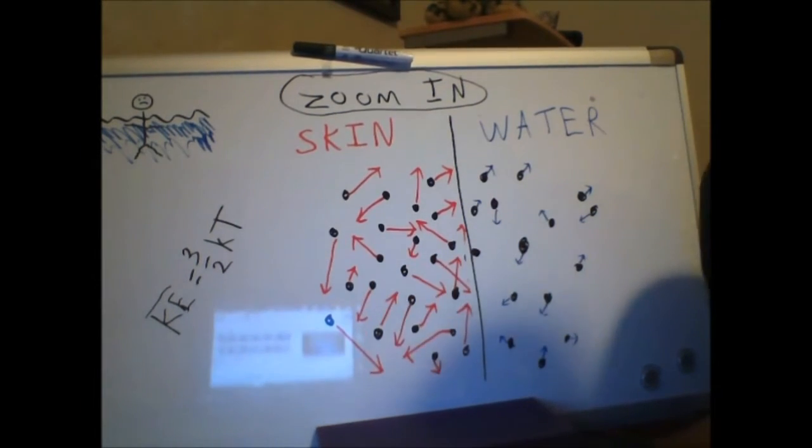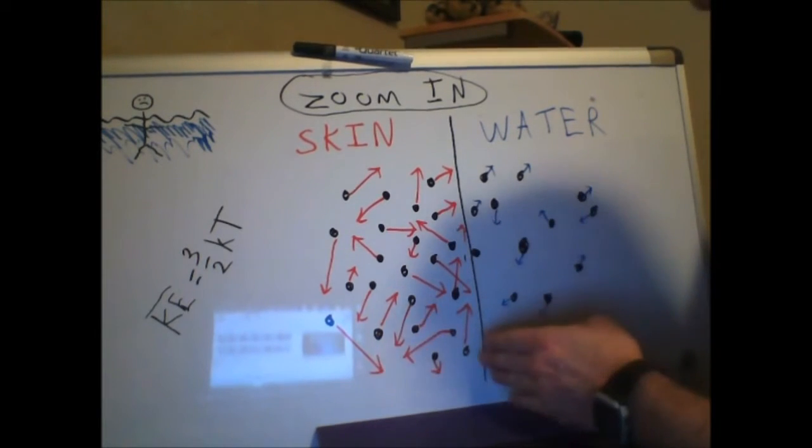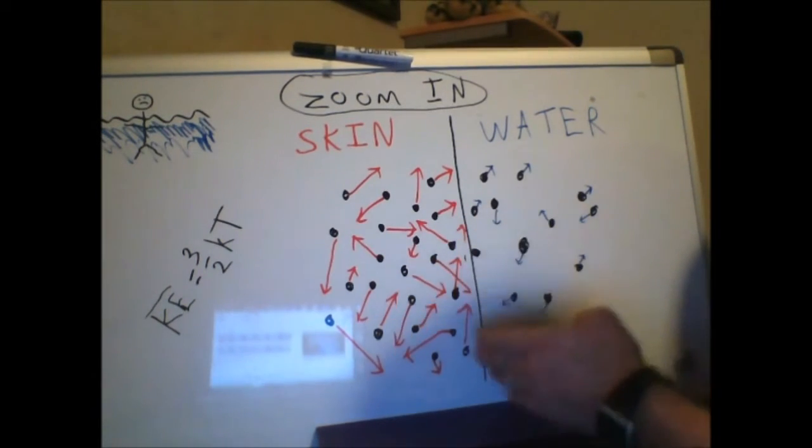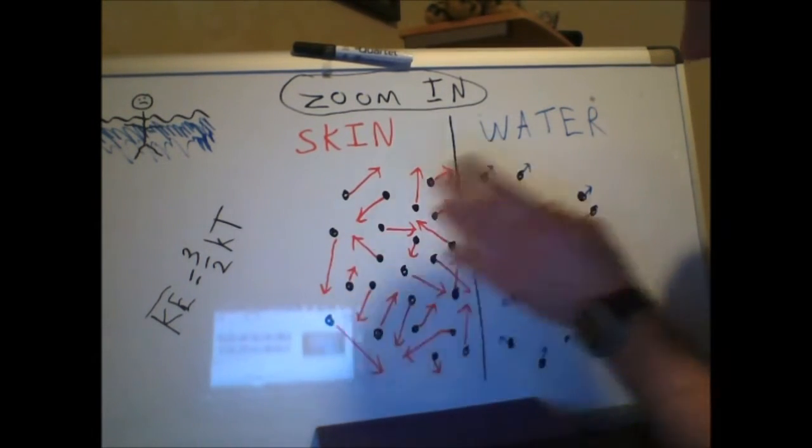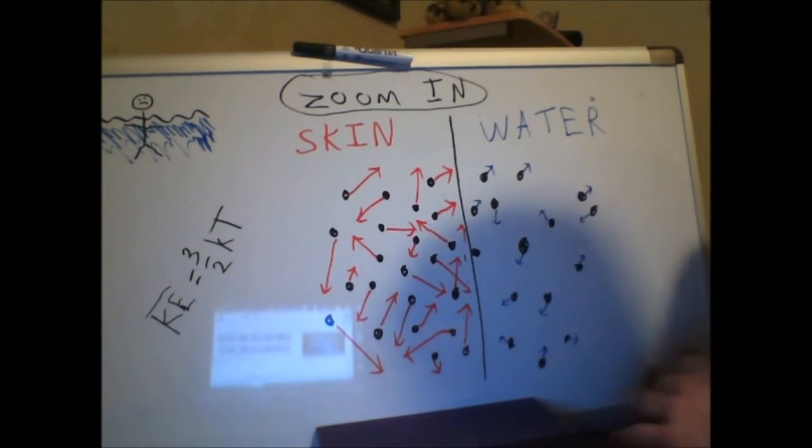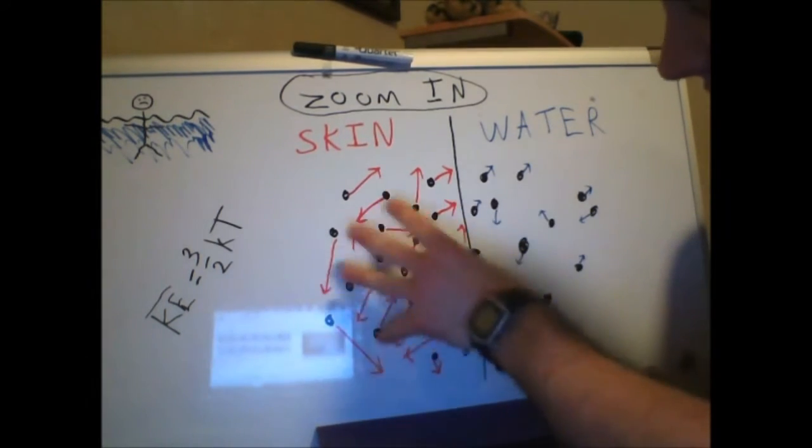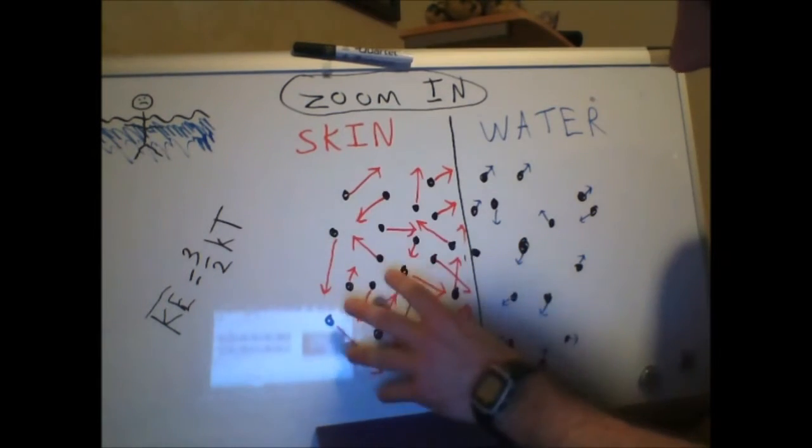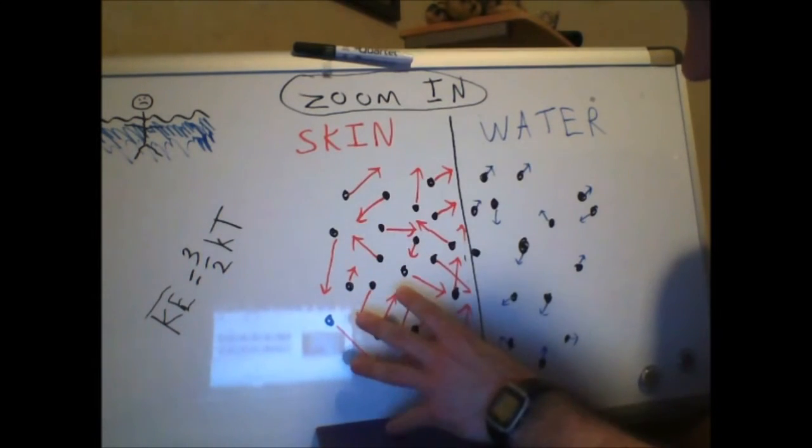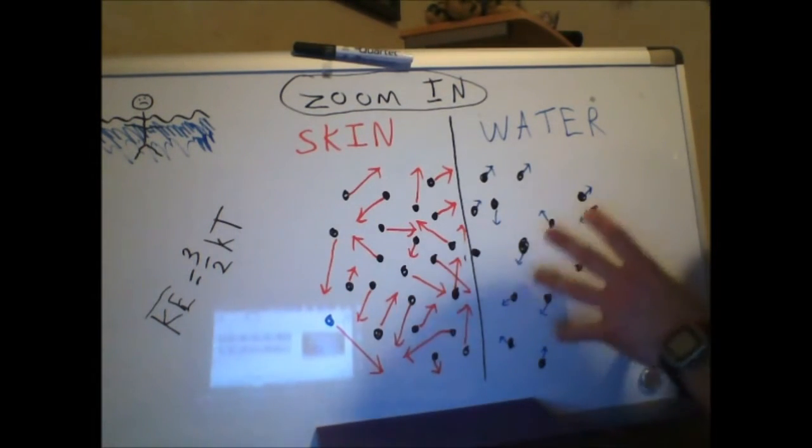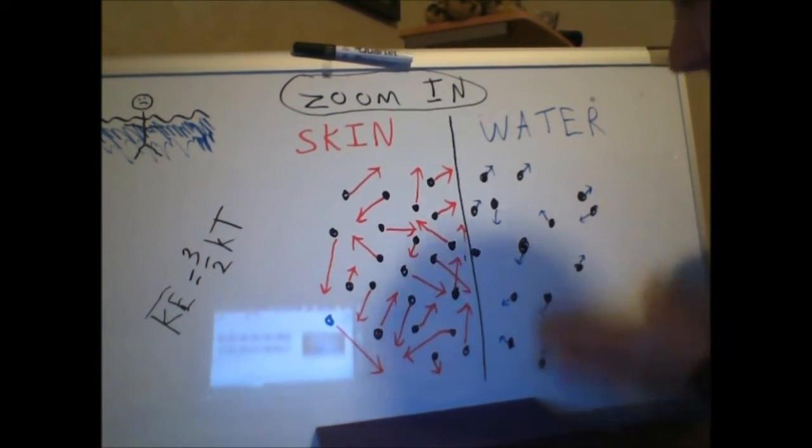So what if we look at this point where the skin molecules actually meet the water molecules? Well, with the more time he spends in the water, there will be more and more collisions between some of his skin molecules and the water molecules. Okay, countless collisions. Now after a huge number of collisions, eventually the average speed of these skin molecules will have slowed down a little bit and the average speed of these water molecules will have increased a little bit.